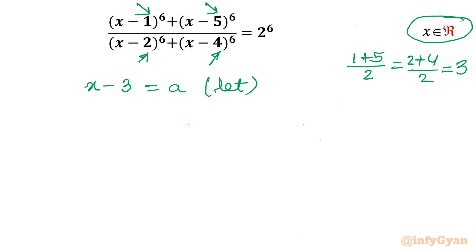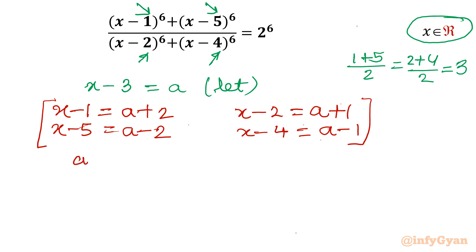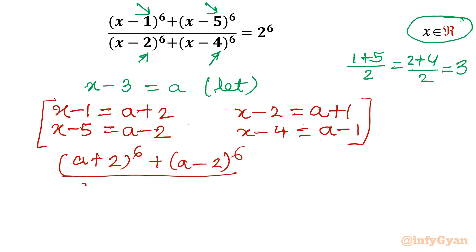From this substitution I will calculate the other brackets. x minus 1 becomes a plus 2, and x minus 5 becomes a minus 2 — these two are for the numerator. For the denominator, x minus 2 becomes a plus 1, and x minus 4 becomes a minus 1. So replacing all brackets in terms of a, our equation becomes: (a+2)^6 + (a-2)^6 divided by (a+1)^6 + (a-1)^6 equals 2^6.